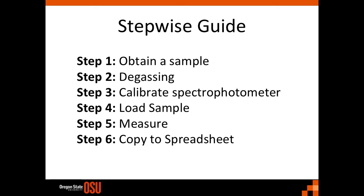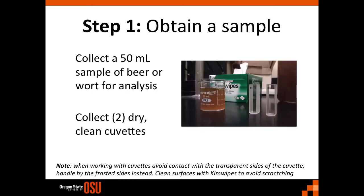Now we will cover a stepwise guide to color measurement. First, we will collect our sample, degas if necessary, calibrate our spectrophotometer, load the sample, take our measurement, and then use the spreadsheet from the American Society of Brewing Chemists to gather our calculated values. Only 50 milliliters of sample is required for this analysis. Additionally, you will need two clean, dry cuvettes that fit the path lengths in the spectrophotometer. When working with cuvettes, it's a good idea to use kim wipes to remove any smudges or fingerprints on the clear surface.